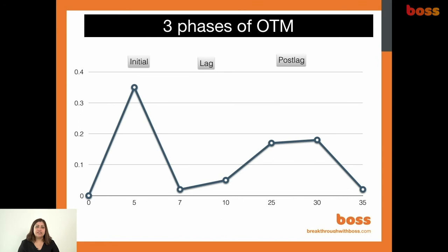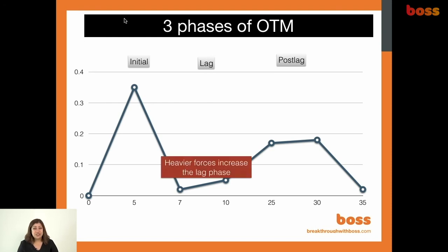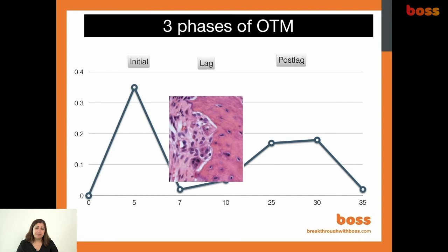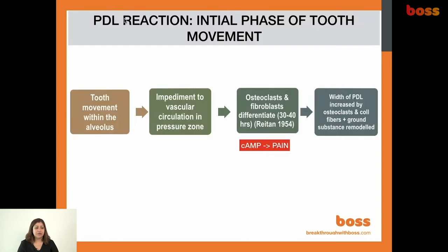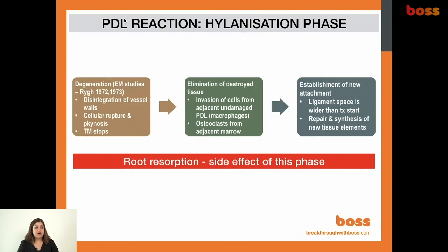Orthodontic tooth movement doesn't progress continuously. There is an initial phase of tooth movement, then a lag phase, then a post-lag phase. We want to reduce the lag phase, which occurs when very heavy forces have been applied. Ideally we go from initial directly to post-lag. In the initial phase, pressure is applied to the bone, vascular supply is impeded, osteoclasts and fibroblasts are recruited, and there is increased osteoclastic activity within the PDL. This is also when cyclic AMP is released, which creates pain.